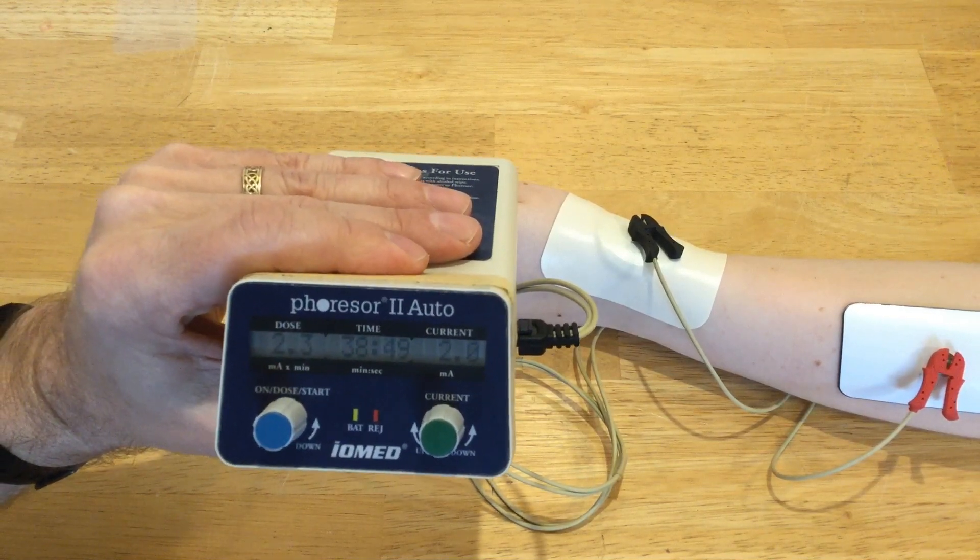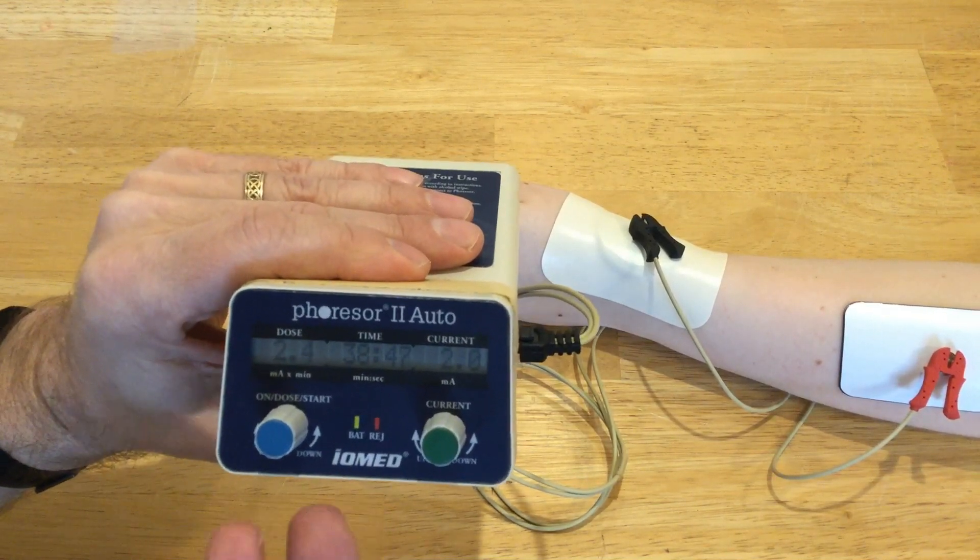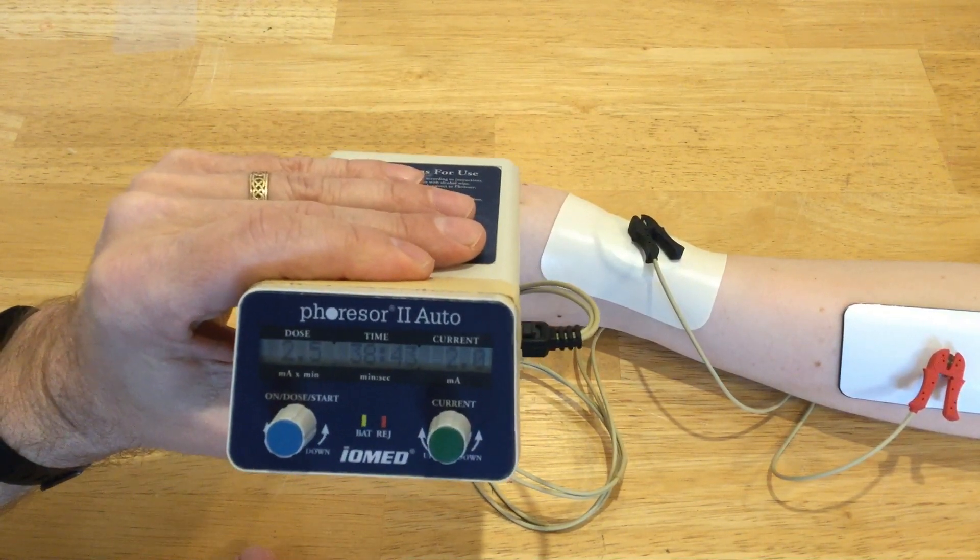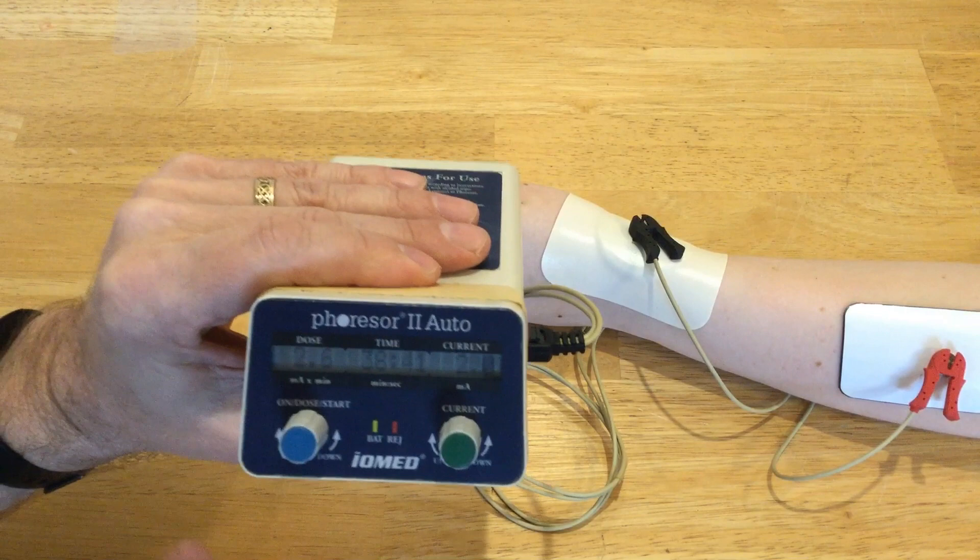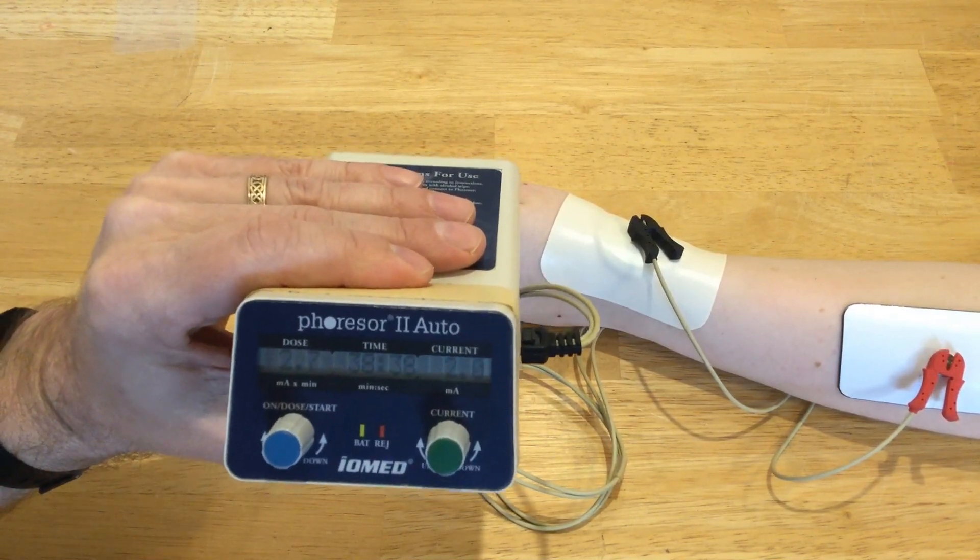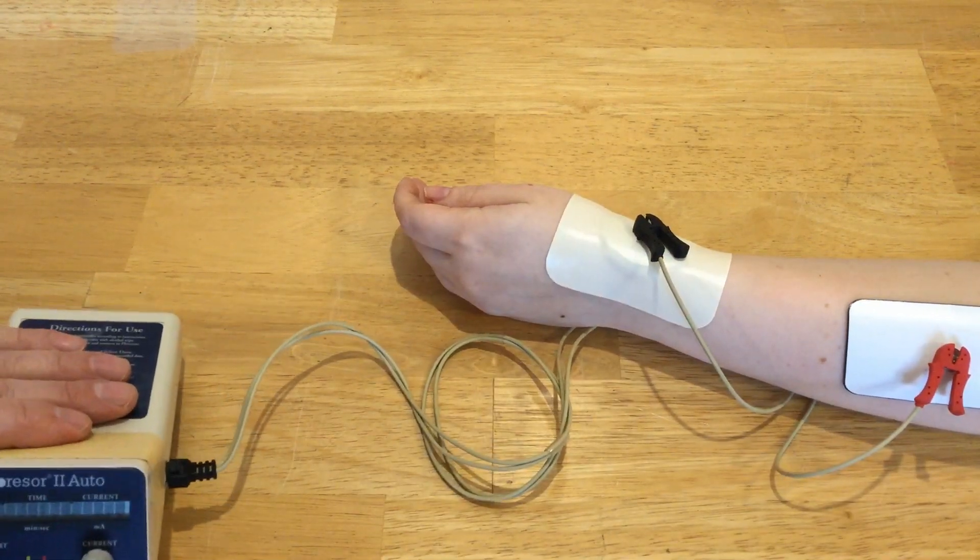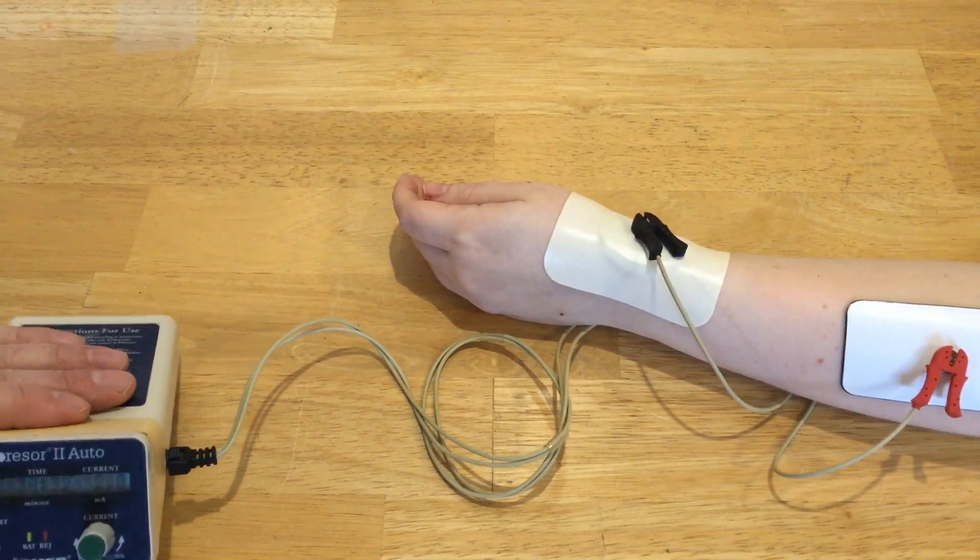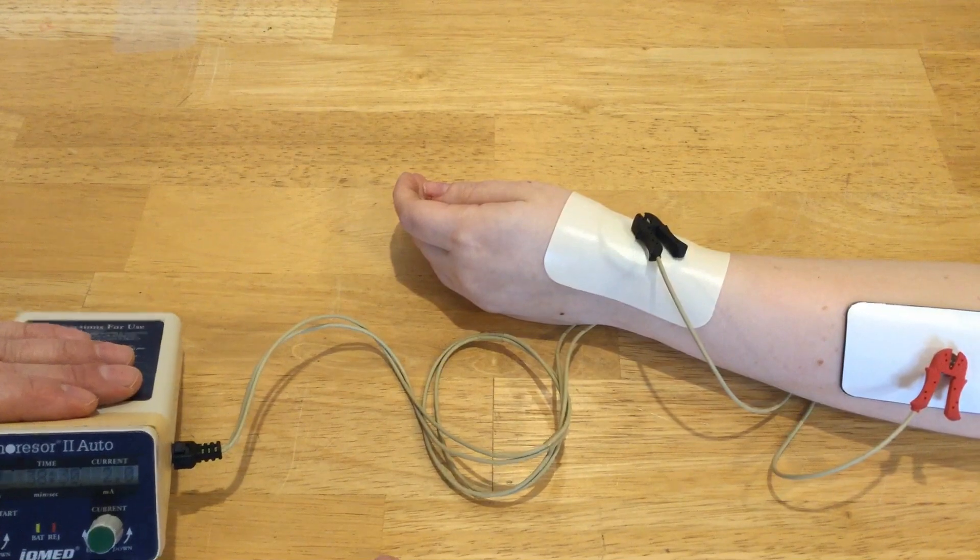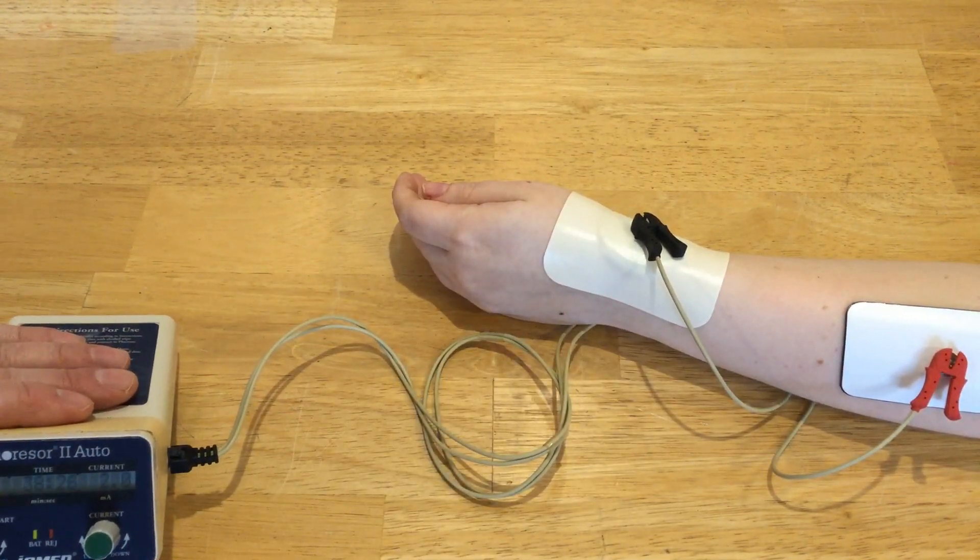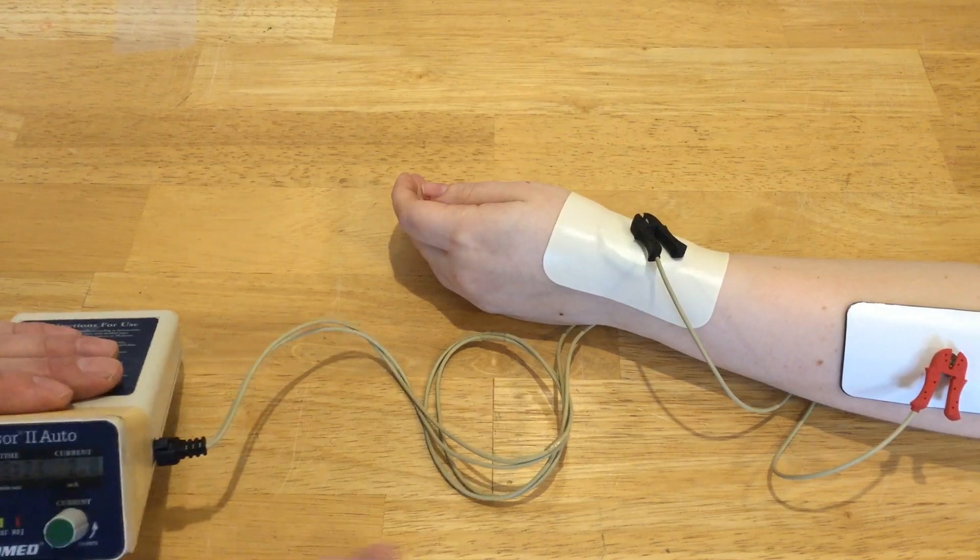Once this is completely finished, the machine will beep and shut off when it has delivered the dose that you have asked it to deliver. After it beeps and shuts off, you'd of course remove the electrodes. I'd have my client just wash with soap and water to get whatever medication is off the surface of her skin, and then we would be done.